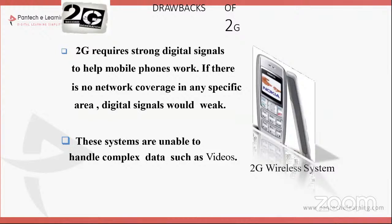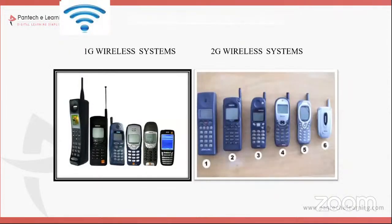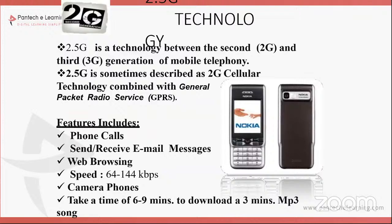The major drawback of 2G was particularly about security. Whenever we were sending that information, it could be intercepted by another person. Also, whenever we sent complex data in the second generation, it was not able to handle that.